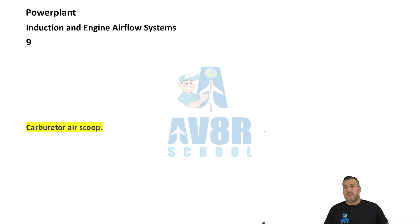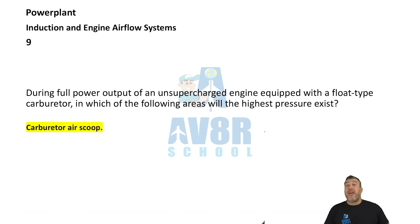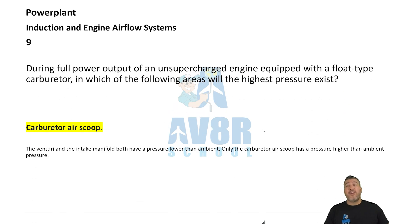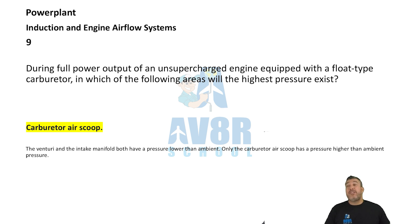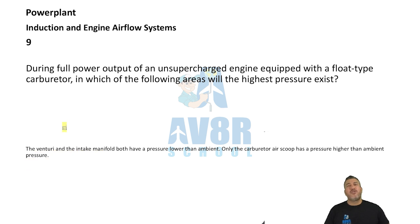Number nine: during full power output of an unsupercharged engine equipped with a float-type carburetor, in which area will the highest pressure exist? That would be the carburetor air scoop.